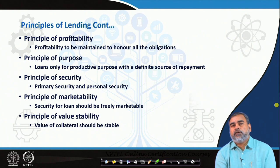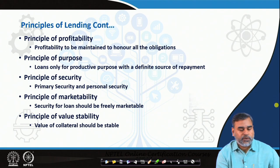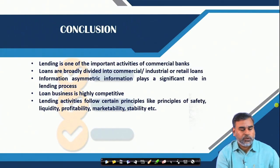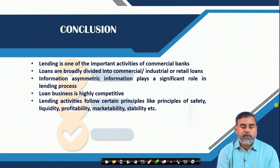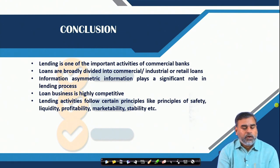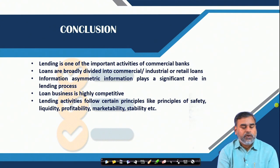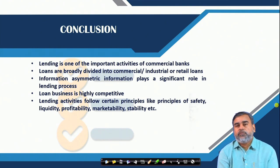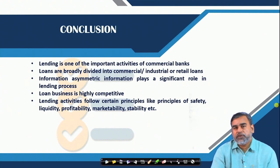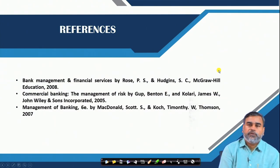These are the different principles commercial banks should follow whenever they are providing loans to different customers. In conclusion, lending is one of the most important activities of the commercial bank. Loans can be commercial, industrial, secured, or unsecured. Information asymmetry plays a significant role in the lending process between the borrower and the lender. Loan business is highly competitive. Lending activities follow certain principles — safety, liquidity, profitability, marketability, stability — by which the profit and liquidity of banks can be properly managed and other types of risk can be reduced through proper diversification of the loan portfolio.